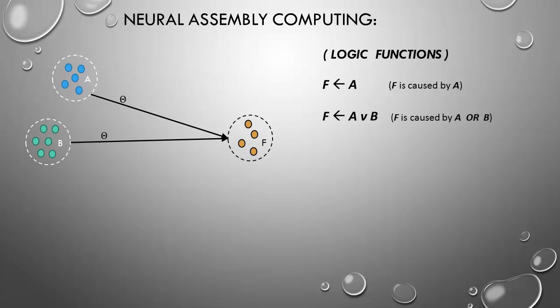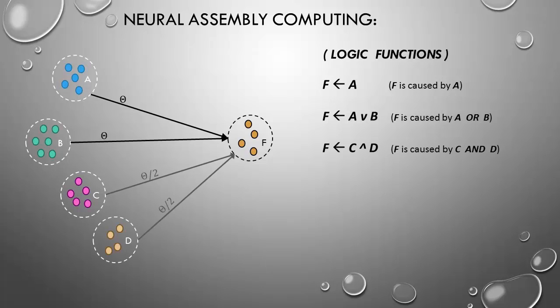Now let's see some neural assembly properties. Firstly, if spikes from A can trigger all neurons in an assembly F, we say F is caused by A. Now, suppose B can also trigger F. It means that A or B can trigger F. This is a logical function OR. Suppose now that two assemblies, C and D, are connected to F by half of theta. These two assemblies may trigger F only if all spikes from C and D coincide in F. This is an AND logical function. Now, let's suppose that an assembly E have an inhibitory connection to F, we can consider this function as the NOT logical function.